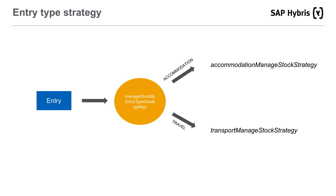Reservation of a stock level for accommodation-related items in the cart happens in the before-submit-order method in the DefaultTravelPlaceOrderMethodHook, which is invoked before the submission of the order. The reservation logic for each entry in the cart is strategy-based and differs based on the entry type, which can be transport or accommodation. The bean defined in the map of different strategies is called ManageStockByEntryTypeStrategyMap. If the entry in the cart is not of type transport or accommodation, a default strategy is invoked that currently performs no action on the order entry's product — an admin fee is an example of a product that falls back to the default strategy.